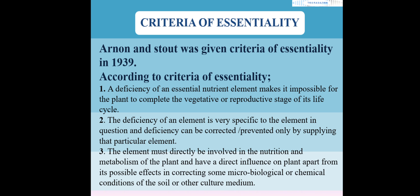The first statement: a deficiency of any essential nutrient makes it impossible for the plant to complete the vegetative and reproductive stage of its life cycle. The second statement: the deficiency of an element is very specific to that element, and the deficiency can be corrected or prevented by supplying that particular element. For example, if there is a deficiency of nitrogen, we have to apply nitrogen to cure that deficiency.